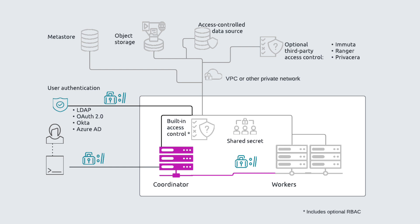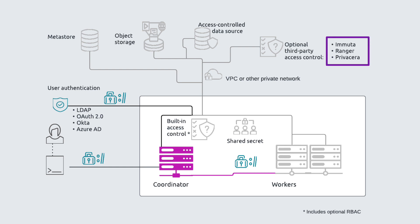Both Starburst platforms offer fine-grained access control through our built-in role-based access control. This includes column and row level authorization and data masking. Starburst Enterprise also includes integrations for third-party tools, such as Immuta, Ranger, and Privacera. Above all, Starburst allows you to take control of your security with ease.